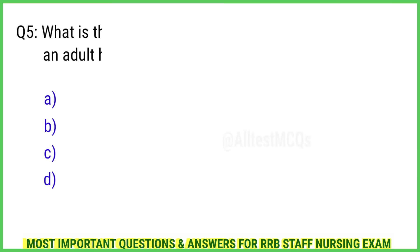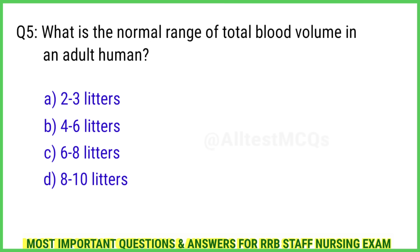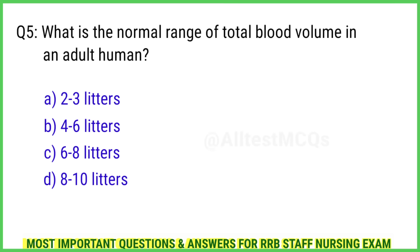Question 5. What is the normal range of total blood volume in an adult human? The right answer is Option B: 4 to 6 liters.